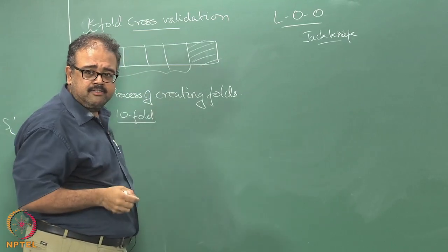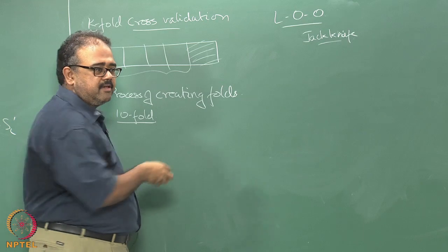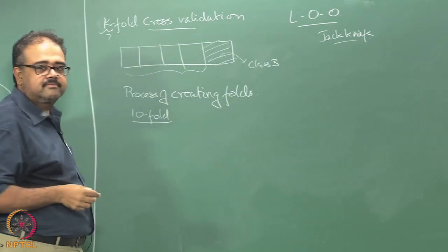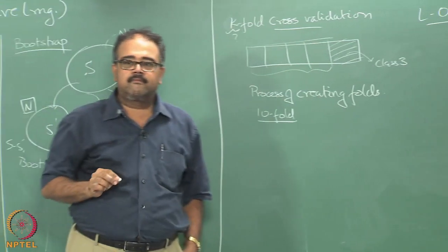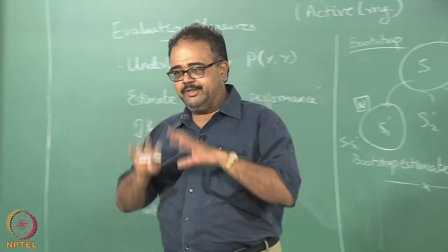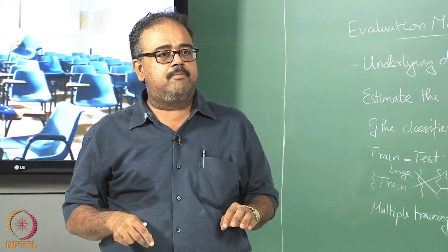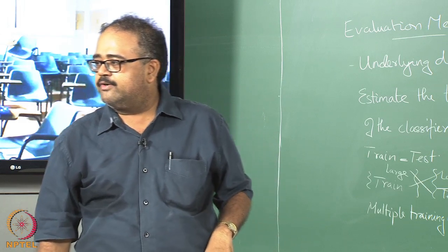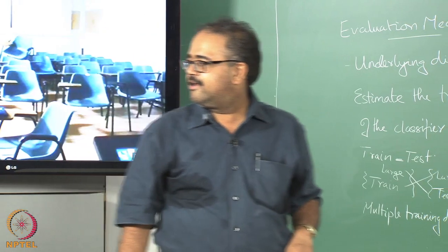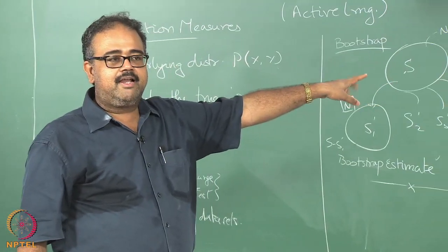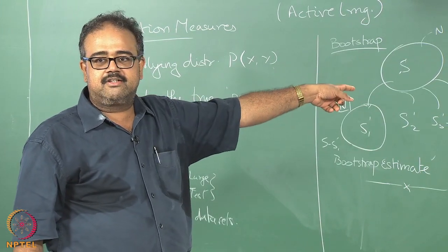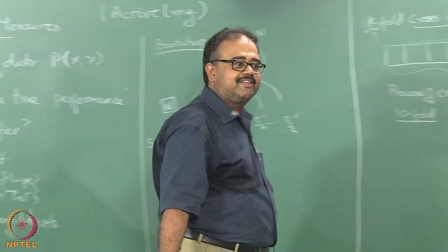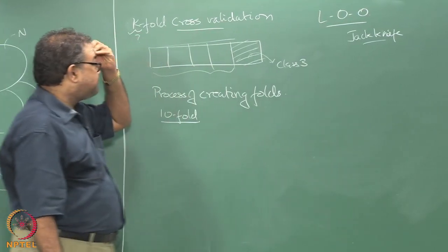Consider a classification problem where one fold is entirely of class 3 and there is no class 3 in the remaining data. This can happen quite frequently if you are careless about how you split your data — for example, if the data came to you sorted by class label and you do 5-fold splitting by serial number, all your class 3 data goes into one fold, the other four folds have none, and you get 100 percent error.